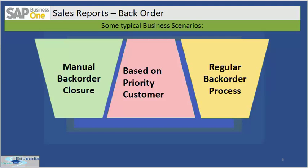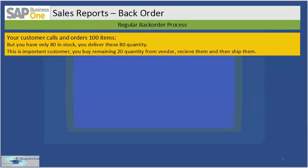Backorder processing based on priority customer: your company has a shortage of keyboards. Two of your biggest customers — Prestige and Pioneer — have ordered 100 keyboards each but have received only 50 so far. Finally you receive 50 more keyboards in stock, and based on your customer priority you choose to go with Prestige because that customer is more important to you. You deliver those 50 keyboards to Prestige first and keep Pioneer on hold.